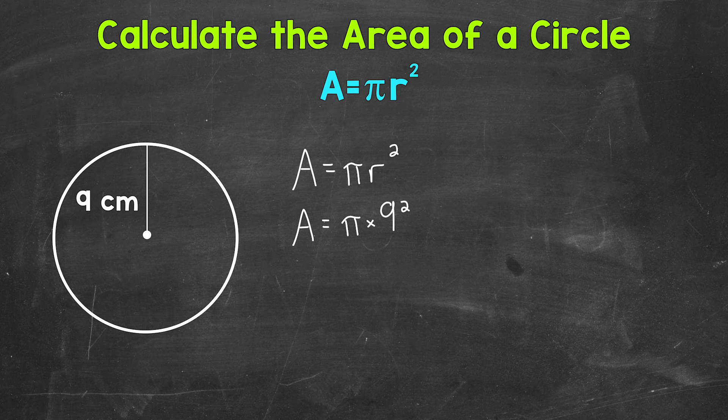So remember, 9 squared, when you square a number, that means multiply that number by itself. So 9 squared means 9 times 9, which is 81. So we end up with pi times 81.